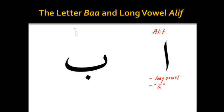Now the ba here is our second letter and it's like the b in English, as in the word bat. Since we have a letter in English that corresponds to the ba in Arabic, that makes it pretty easy. So our two letters here are alif — ah — and ba, as in the b in English.